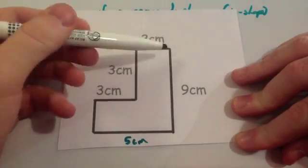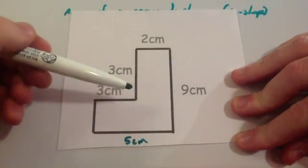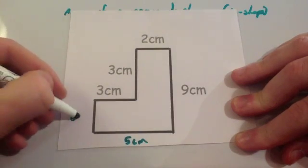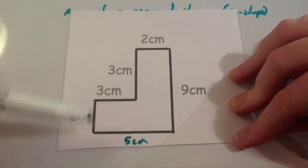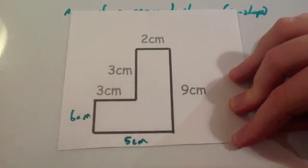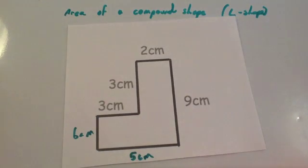The whole height of it is 9, and if this part's 3, well that means that this part here has to be 6. Now obviously it doesn't look like 6, it's not a very good drawing, but if we've got 3 and 6 then that would make 9. So the first thing we've done is just label the missing sides.